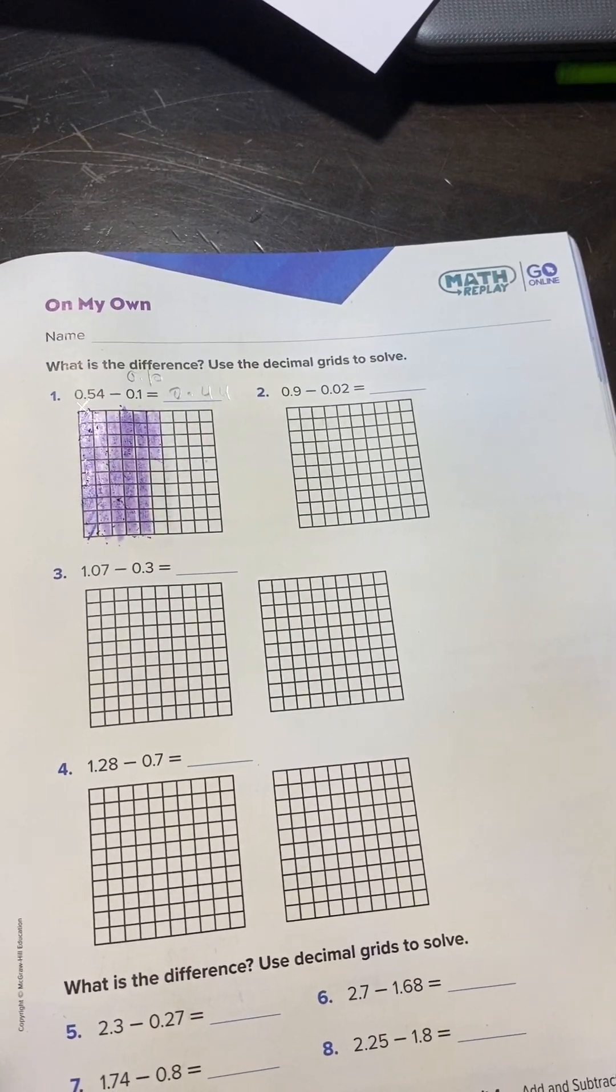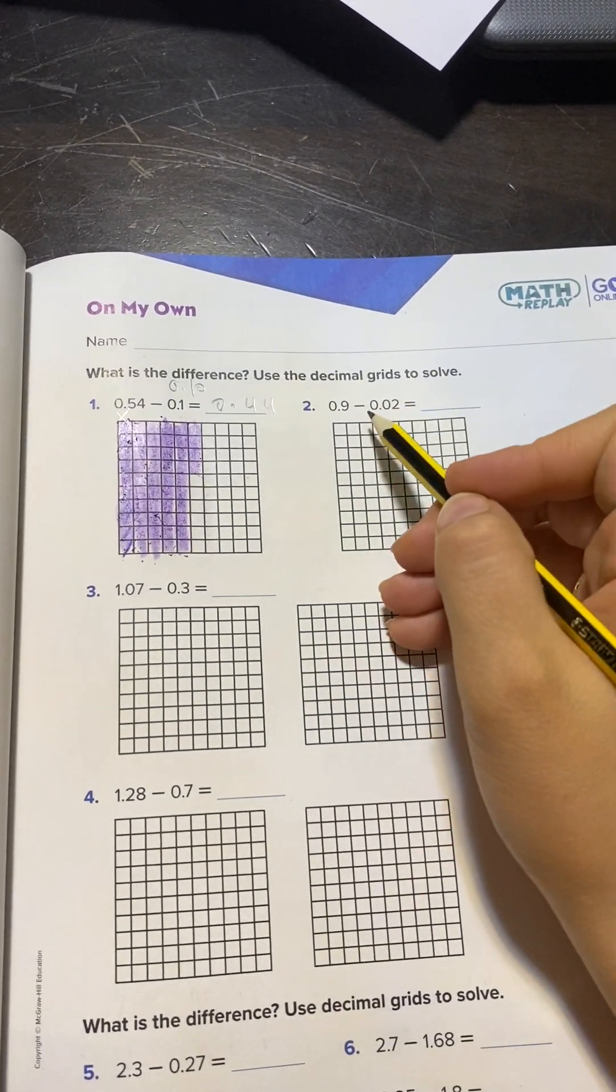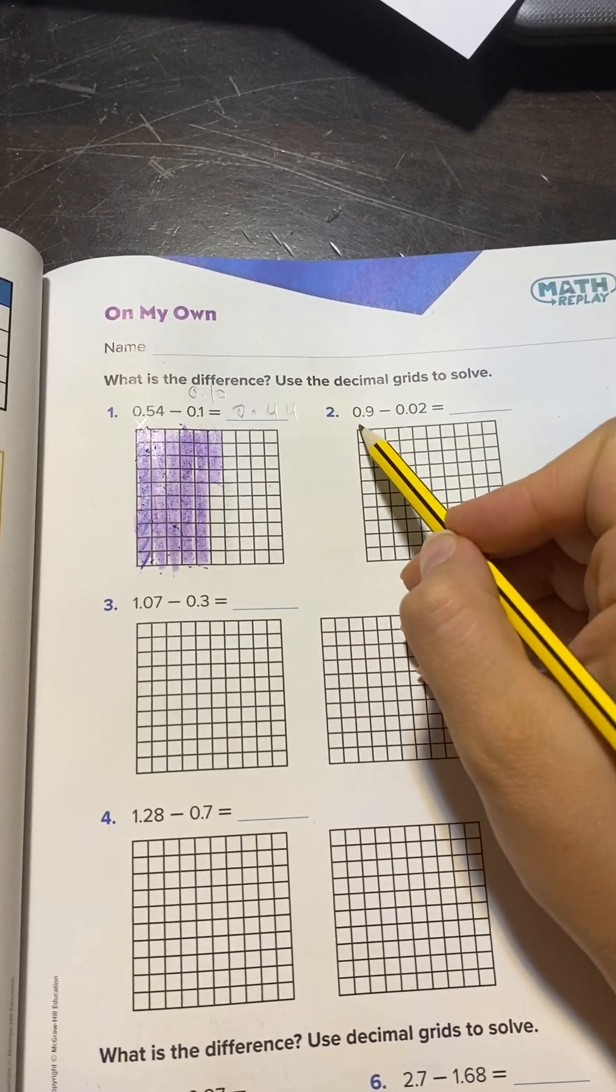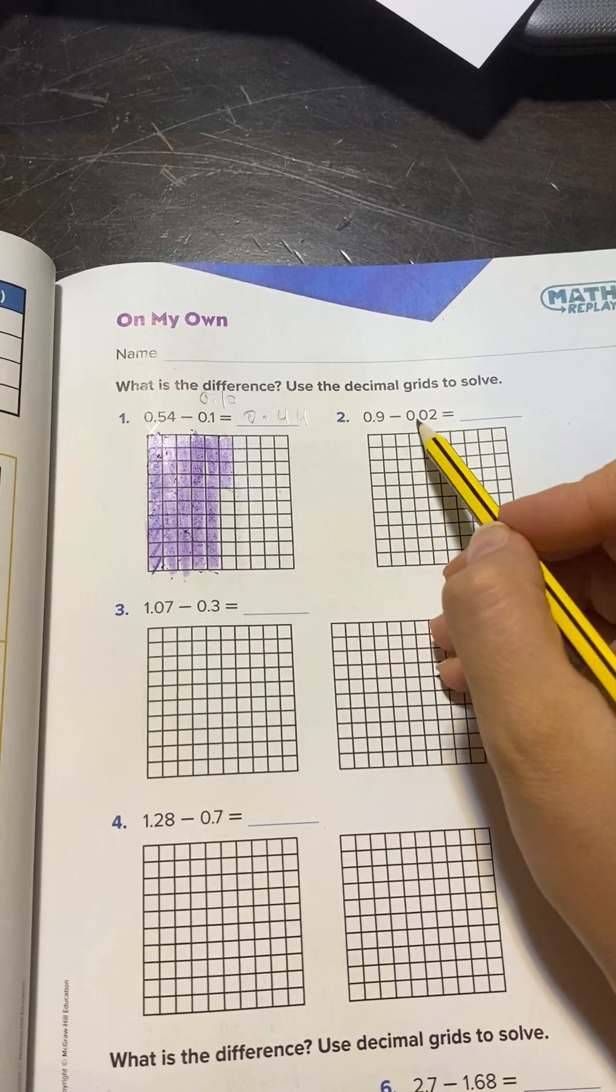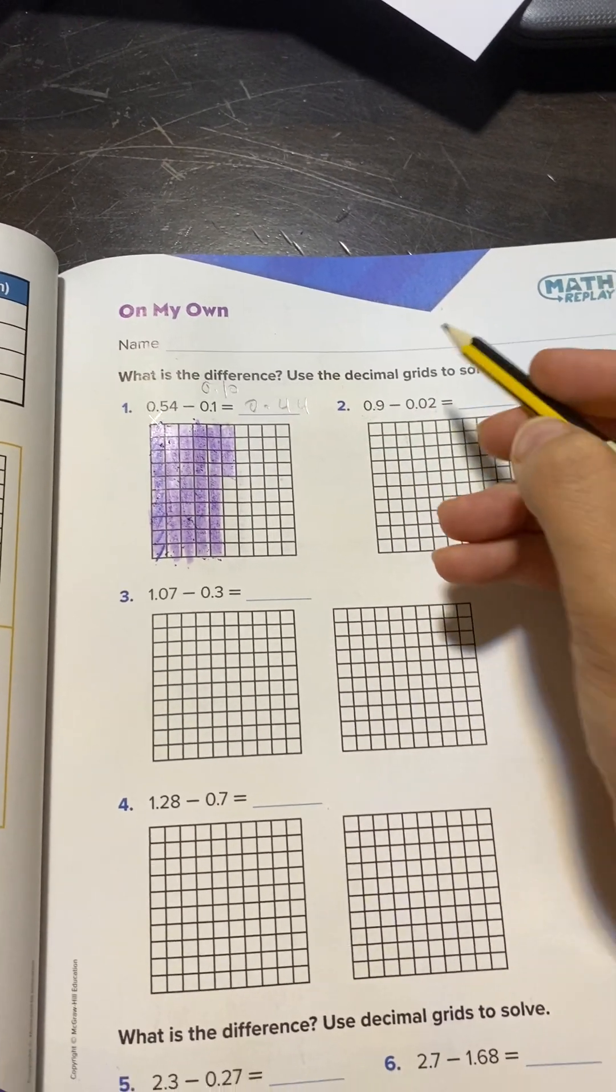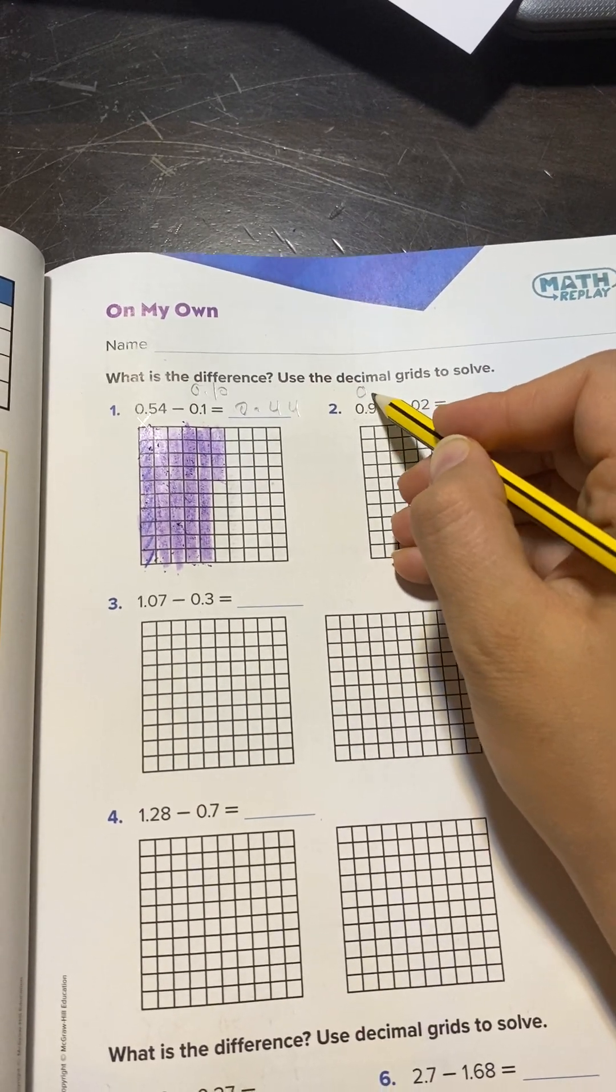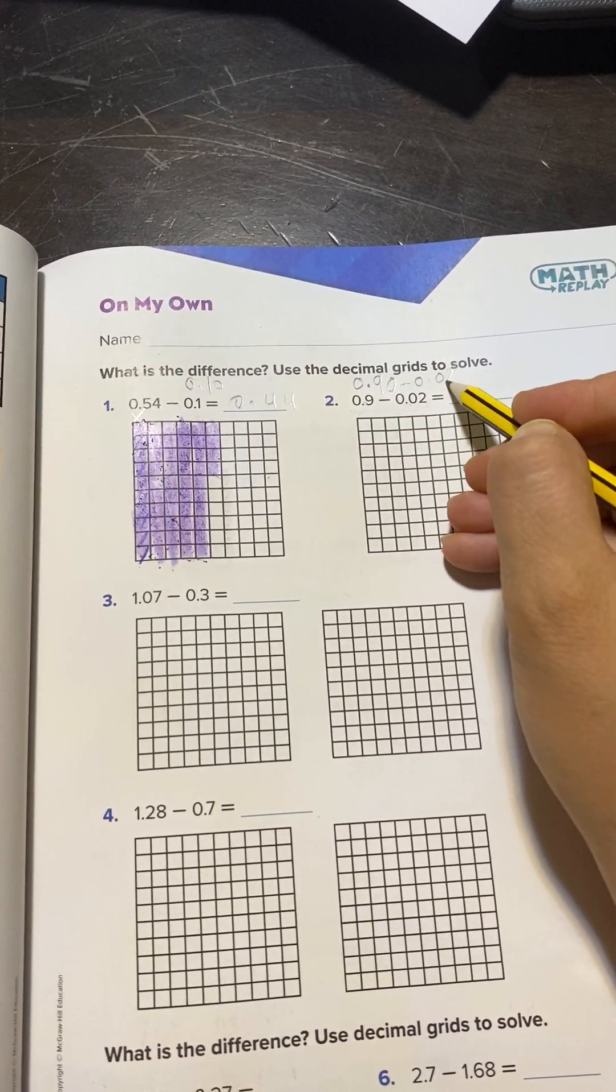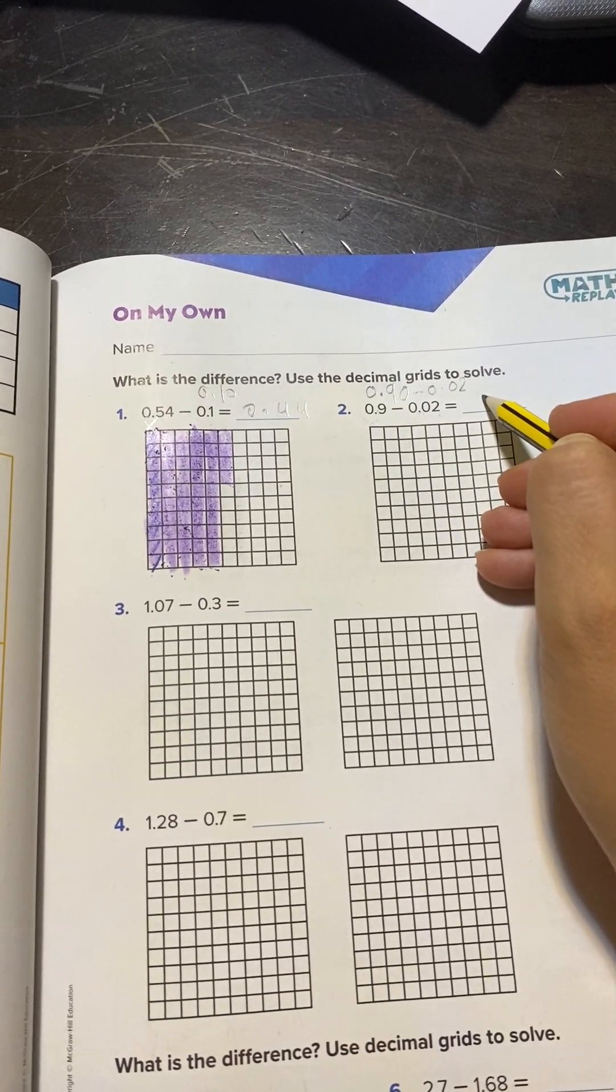Now let's take another example: 0.99 minus 0.29. Can we subtract different forms? No, we have to make it two digits, two digits. So we will add here a 0. It will be 0.90 minus 0.20.